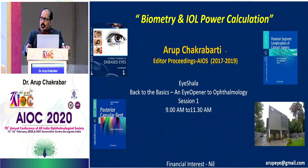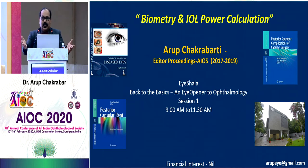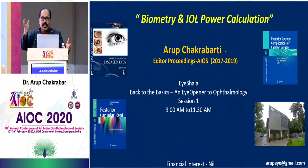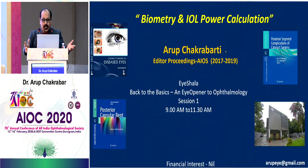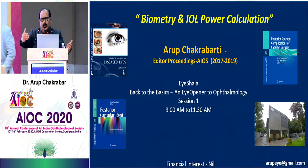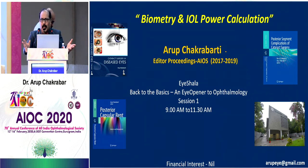As a cataract surgeon, you are assessed by your patient and their peers — who refer patients to you — by the refractive outcome. Nobody is really bothered about what PHACO machine, microscope, or lens you're using. It is the final refractive outcome that is most important. This is a somewhat dry subject — how to improve your biometric results and get better IOL calculations — but people have gradually started realizing its significance, and halls with talks on IOL calculations go absolutely full.